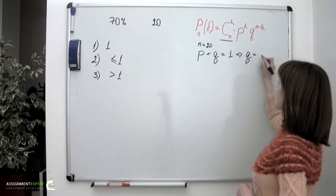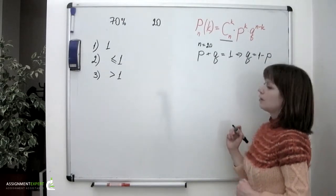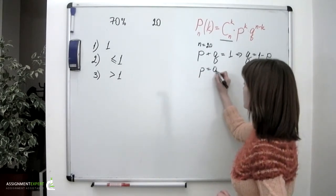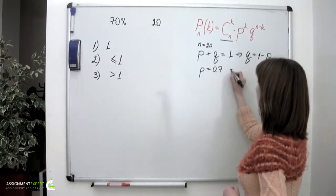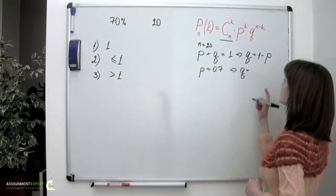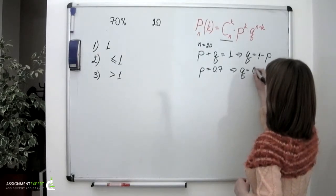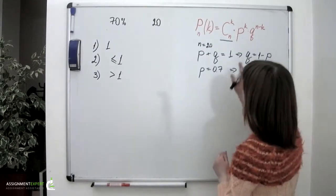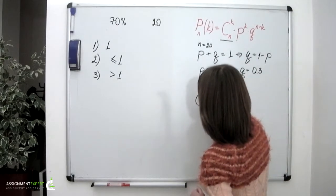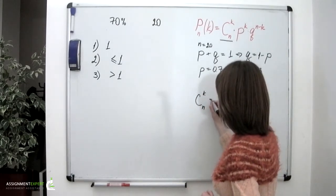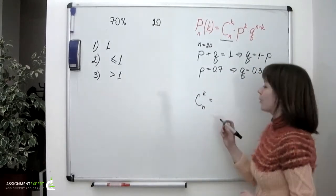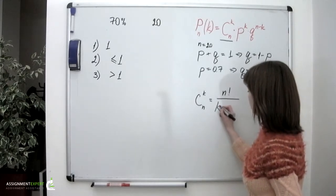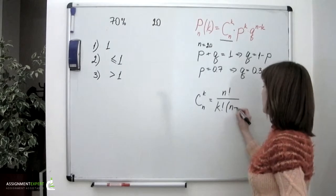Hence q is equal to 1 minus p. In our case, the probability of success is 70% or 0.7, and consequently q is 1 minus 0.7, which is 0.3. The combination factor C(n,k) is calculated as n factorial divided by k factorial times n minus k factorial.